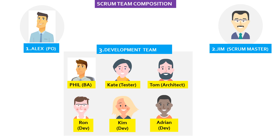The second key role is scrum master. The scrum master helps to keep the team accountable to their commitments to the business, removes any roadblocks that might impede the team's productivity, and organizes critical meetings. We will have more on this in the next episode. Jim joins the team as scrum master.